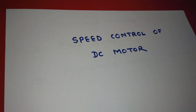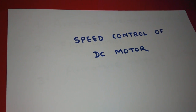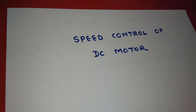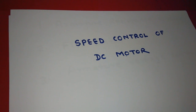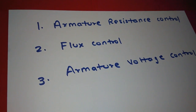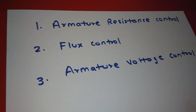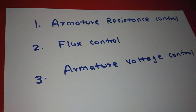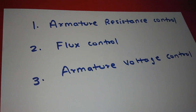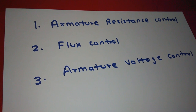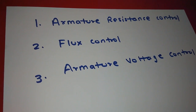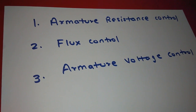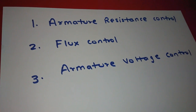Hello friends, today we are discussing about speed control of DC motor. Speed control of DC motor is done by these three methods: first is armature resistance control, second is flux control, third is armature voltage control.